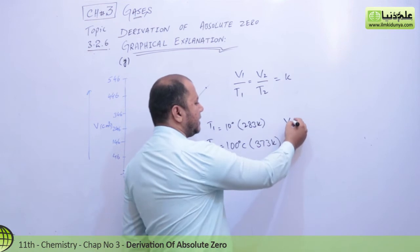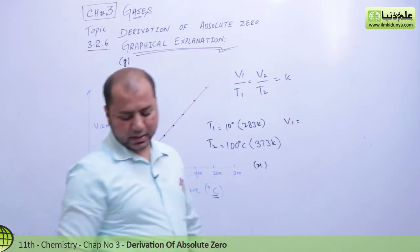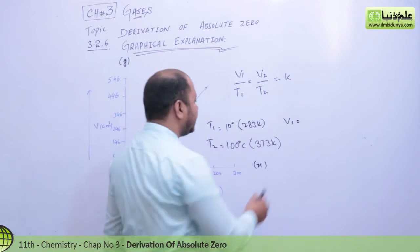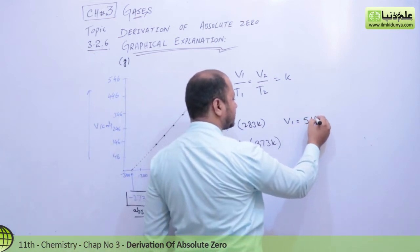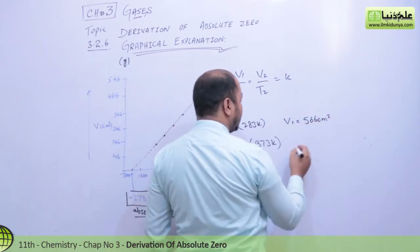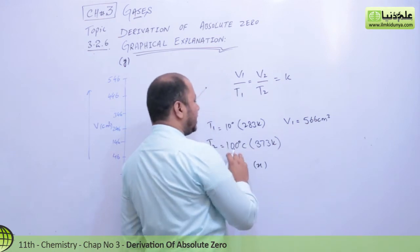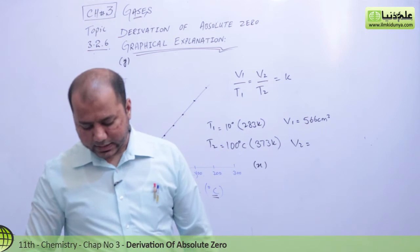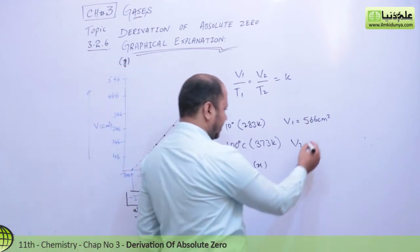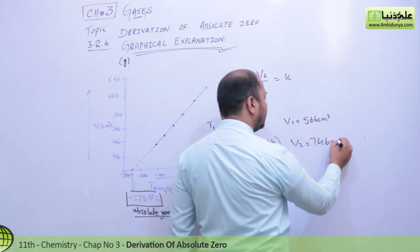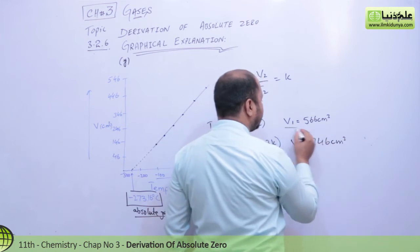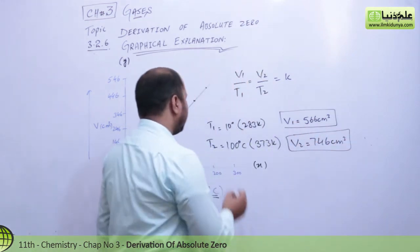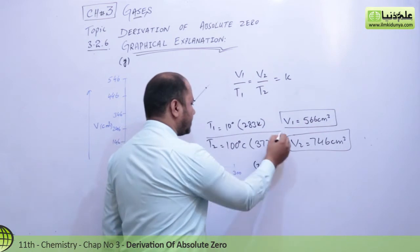The initial volume V1 was 566 cm³. The temperature was increased, so the volume also had to increase, and V2 is 746 cm³. These are the values we have taken for volume and temperature.